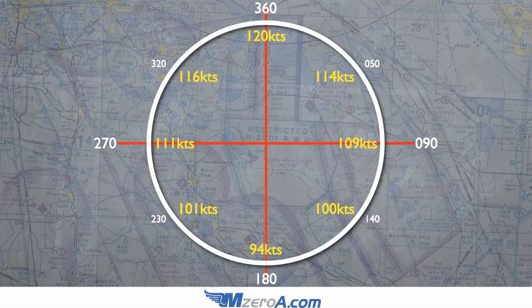I'll bring up a graphic real quick so you can see that. The purpose of a wind card is specifically for deviations. You're on your checkride, the examiner says, hey, I need you to deviate to such and such an airport. You would bust out your wind card, and as you can see, this is something you would pre-calculate. You can tell what your ground speed would be no matter what direction you are heading. So you'll know, okay, this airport is to the north, my ground speed will be X. You will know what your ground speed is for no matter where your deviation takes you.